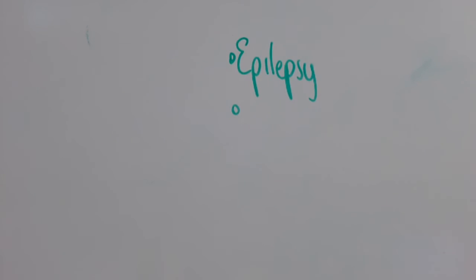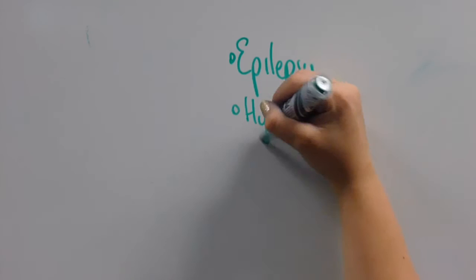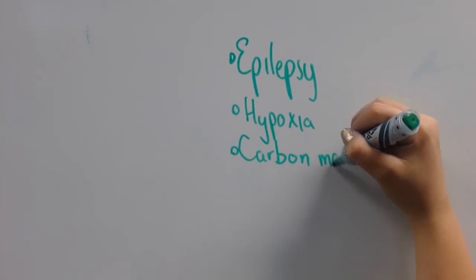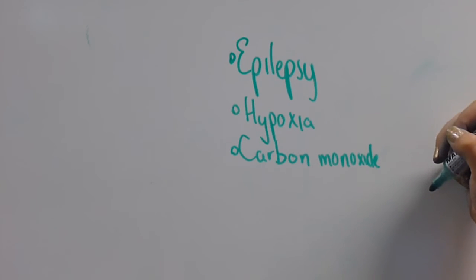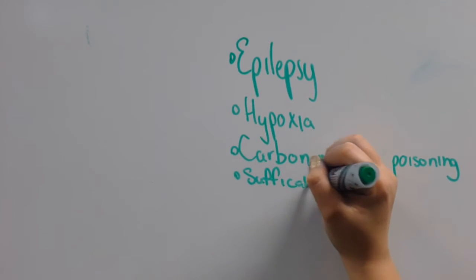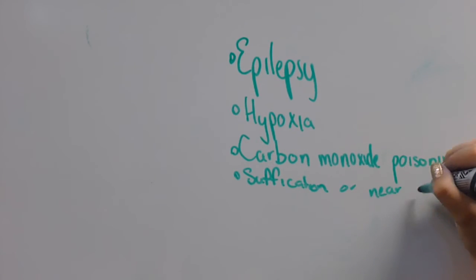Damage to the hippocampus can be due to many known accidents, such as strokes or aneurysms to one of the arteries which supplies blood to the medial lobes, as well as epilepsy, hypoxia, carbon monoxide poisoning, near drowning, or suffocation during early stages of Alzheimer's or during the average aging process.